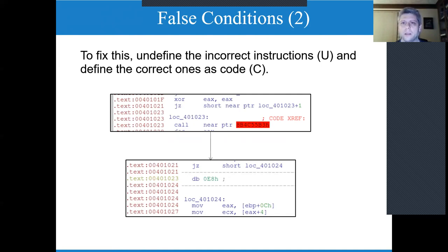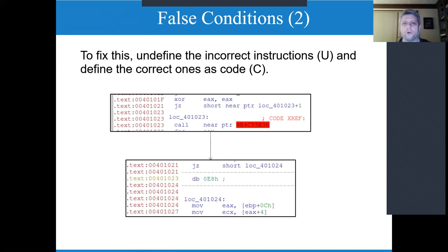Just like with junk code, to fix false conditions: highlight the incorrect instructions and press U to undefine, then go to the correct instructions and press C to define the code. Keep in mind you may have to do this multiple times — IDA Pro doesn't always get everything correctly on the first pass. You'll see some bytes still showing as data after the first redefinition, so just press C again until you get clean-looking code.